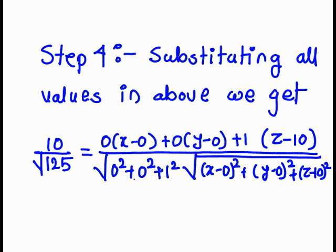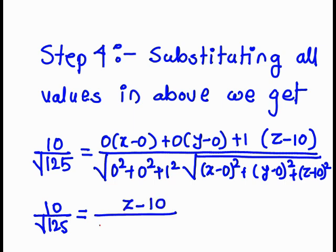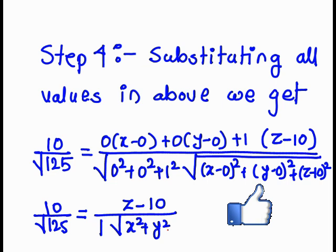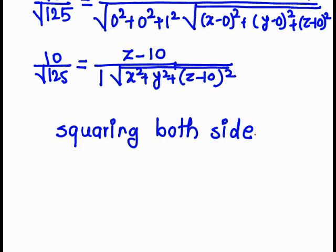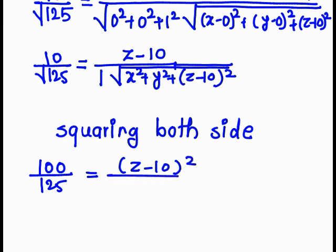Simplifying: 10/√125 = (z − 10) / √(x² + y² + (z−10)²). To remove the square roots, we square both sides: 100/125 = (z − 10)² / (x² + y² + (z−10)²).